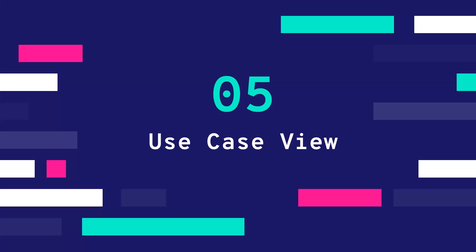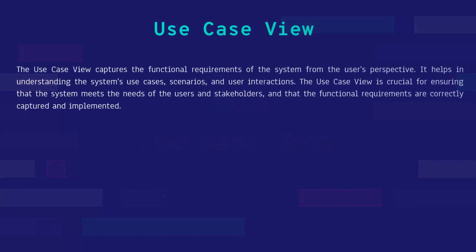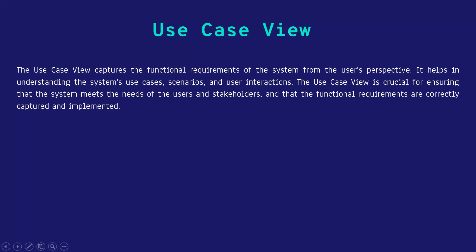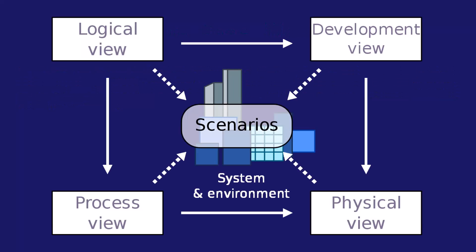Now it's time to review the scenario, or better known as the use case view. The use case view captures the functional requirements of the system from the user's perspective. It helps in understanding the system's use cases, scenarios and user interactions, ensuring the system meets the needs of users and stakeholders. All four main views — logical, process, development and physical — connect to the use case view, which is why we want to make sure all views are implemented correctly. If all enterprise applications used this 4 plus 1 architectural view model, failure on enterprise projects would decrease significantly.